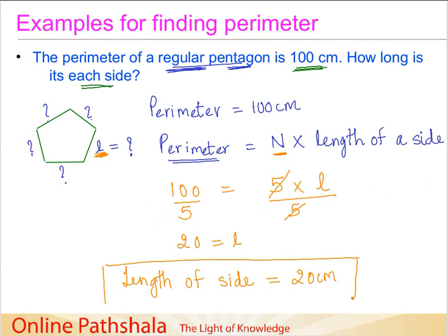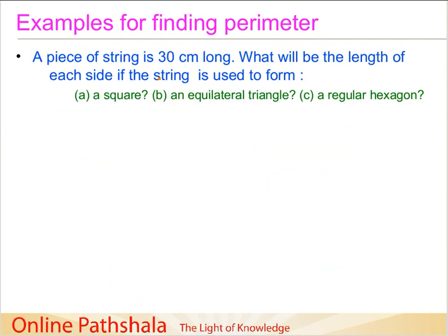So this is an example in which we went the reverse way that we knew a perimeter and we found out the length of this pentagon. Now let us see one more example and this one is a bit interesting.